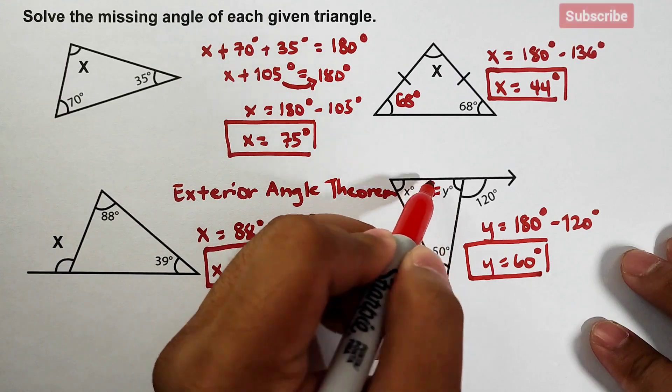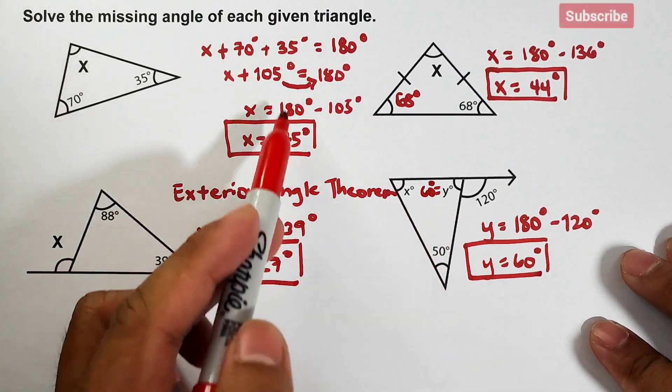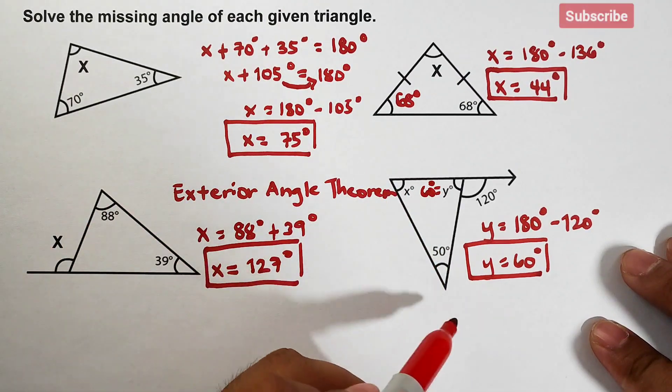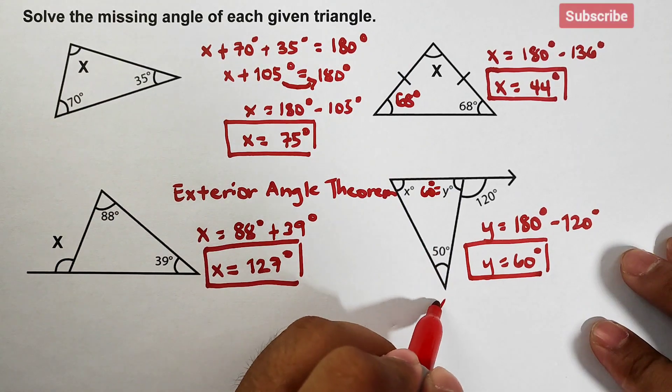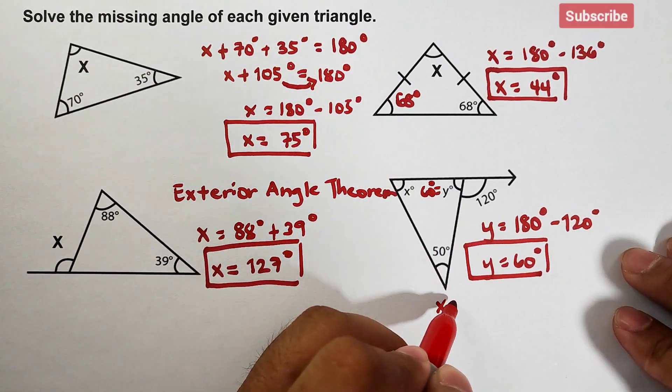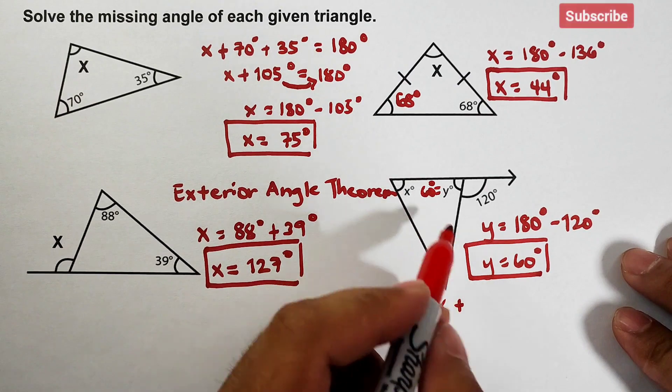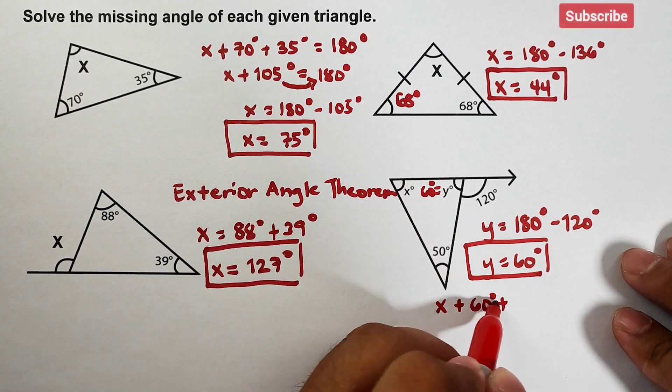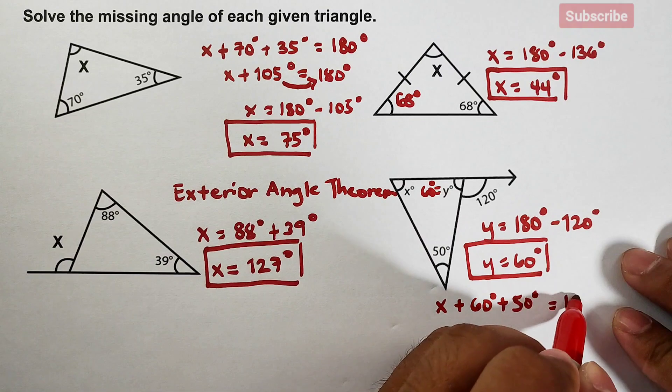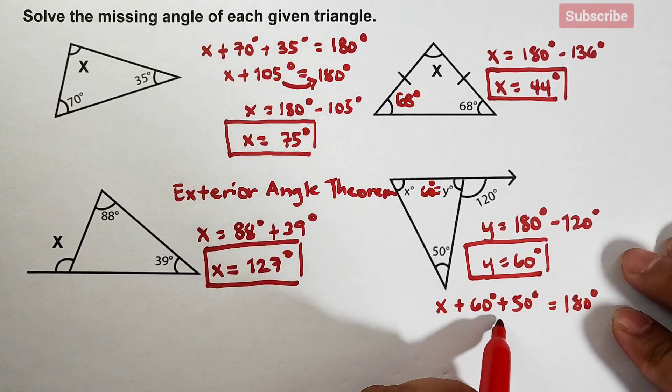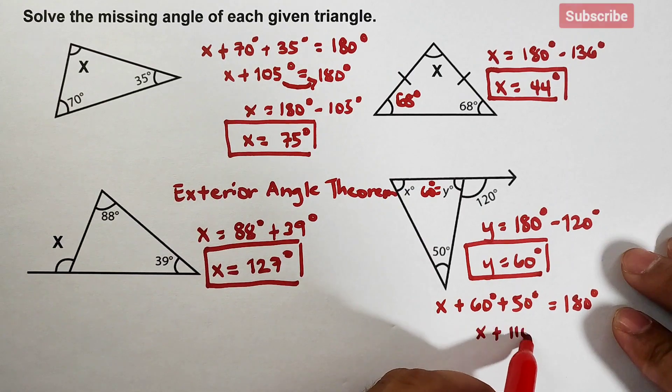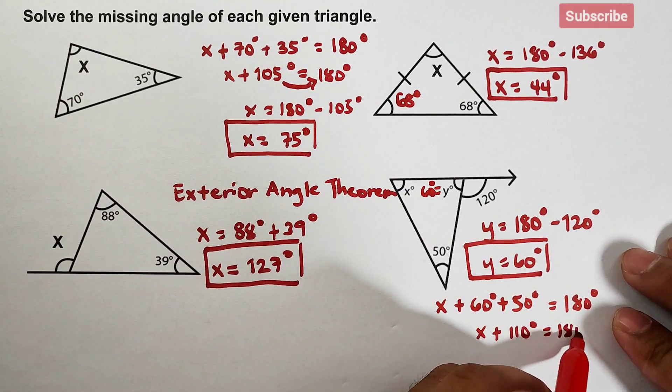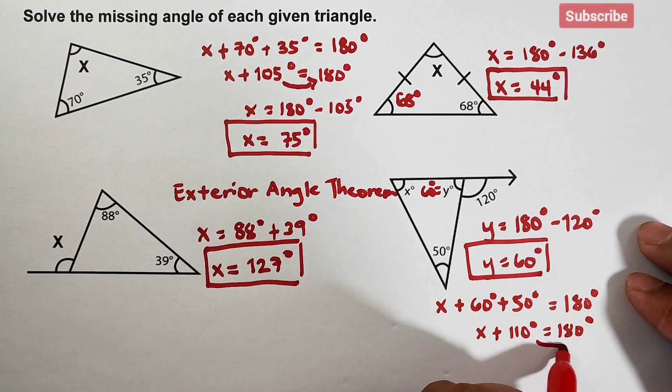Now for the variable x, since this one is already 60, so we will use the concept that we used here in number one. So that is x degrees, a proper way, that is x plus 60 degrees plus the 50 degree angle, that is equal to 180 degrees. Add this to your x plus 110 degrees is equal to 180 degrees. Transpose this to the other side.